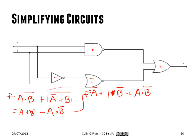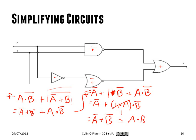At this point B-complement is common in both terms, so we can factor it out. What we're left with is one OR A, all times B-complement. One OR A is always equal to one, so that term becomes one, and one AND B-complement is just B-complement. This then equals A-complement OR B-complement, and using De Morgan's we know this is just a NAND gate. So using a few rules step by step, you can reduce this whole circuit to a simple NAND gate.